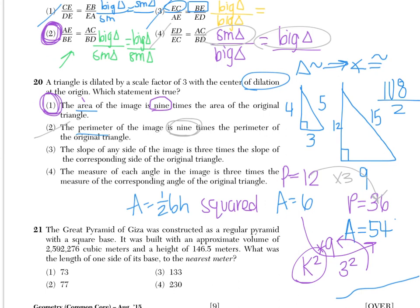Choices 3 and 4 don't make sense: in a dilation, angles are congruent, not 3 times each other. And the slopes of corresponding sides — for example the diagonal in the original and the diagonal in the image — are equal to each other when you dilate. They're parallel and will never intersect. So choice 1 is confirmed for number 20.